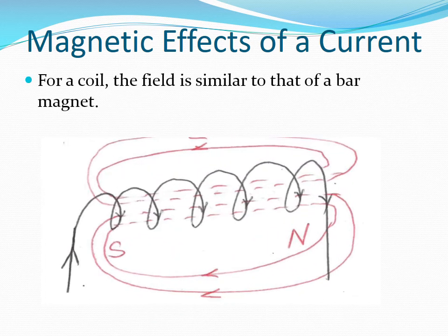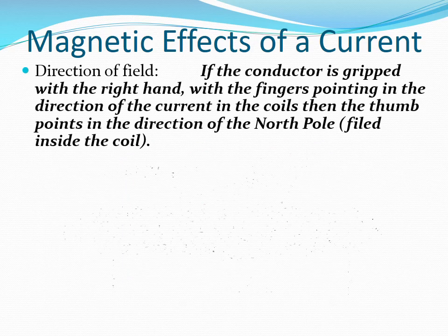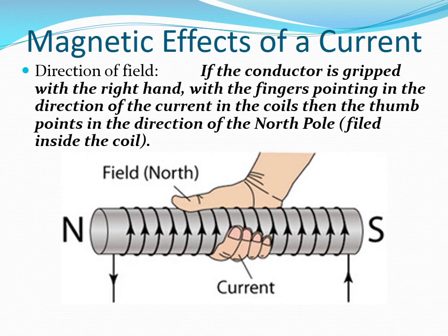For a current-carrying coil, the nature of the magnetic field is similar to that of a bar magnet. The direction of the magnetic field is again given by the right-hand grip rule. But this time, we grip the coil, or pretend to be gripping the coil using our right hand. We make the fingers point in the direction of the current in the coils. Then, the thumb is going to point in the direction of the north pole, or equivalently, in the direction of the field inside the coil.